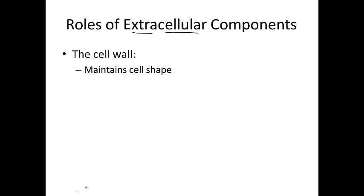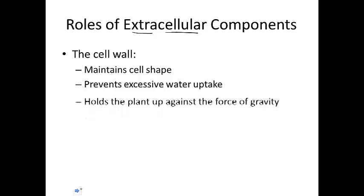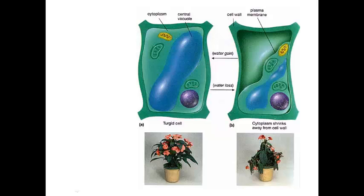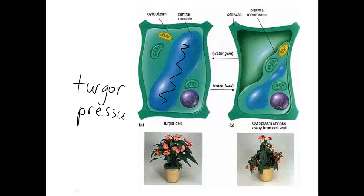Finally, there are some components found outside the cell but attached to it — extracellular components. An example is the cell wall, which is not considered an organelle. It helps the cell maintain its shape, prevents too much water from being taken up, and in a plant it helps hold the plant up against gravity. Here's an example: a plant cell wall with water — the central vacuole fills up and exerts pressure on the inside of the cell, keeping it rigid. You can imagine it like a water balloon inside a flimsy box. If the balloon is filled up, it helps to keep the box rigid. This pressure is called turgor pressure.